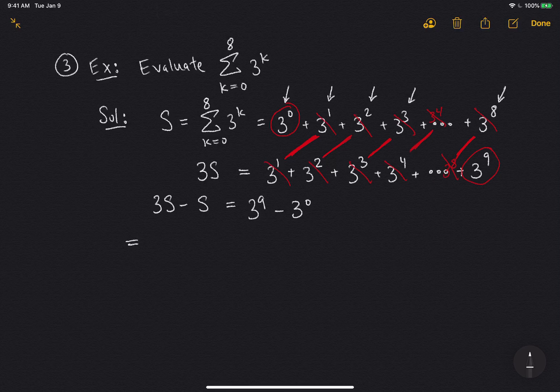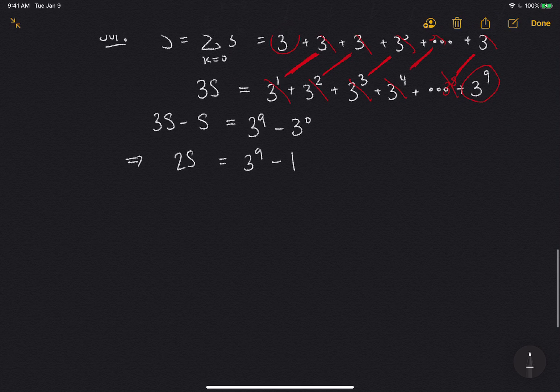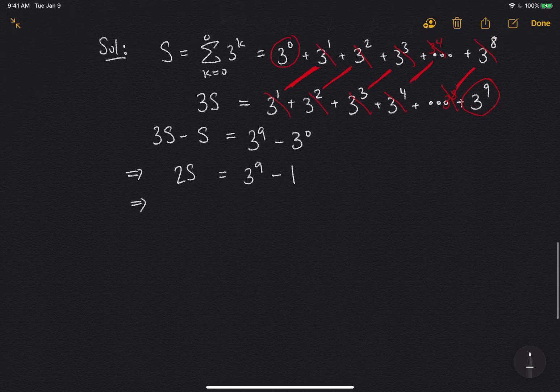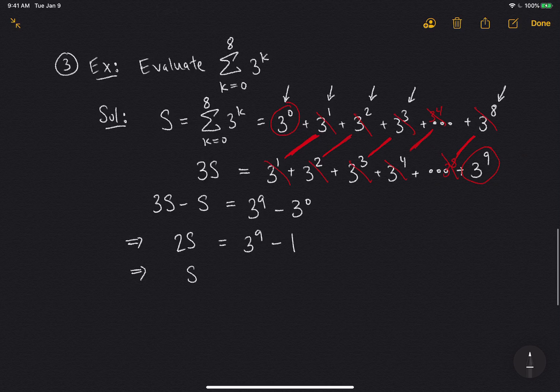Okay, let's simplify this a little bit. Obviously, 3S minus S is just 2S. And I have 3 to the 9 minus 3 to the 0, which is just 1. And now I can solve for S just by dividing by 2. So S is 3 to the 9 minus 1 divided by 2. So that's nice. That's a lot easier than just plugging and chugging.